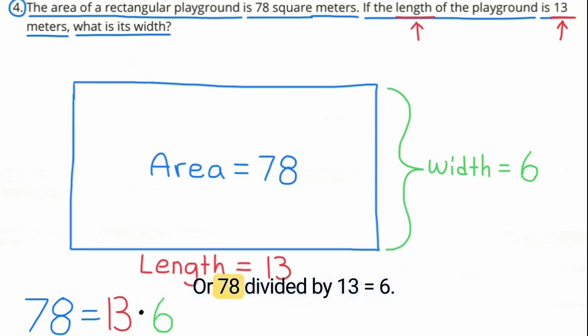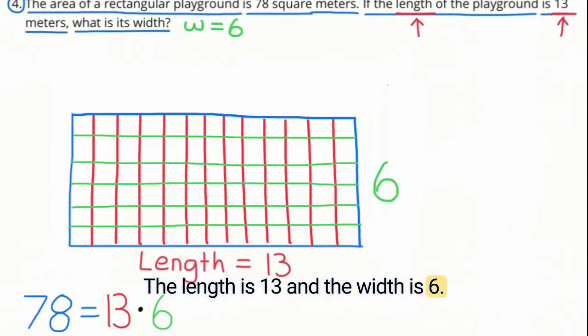6. Or 78 divided by 13 equals 6. So the width is 6. The length is 13 and the width is 6. Inside this rectangle there would be 78 meter squares.